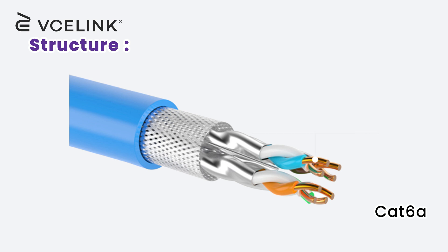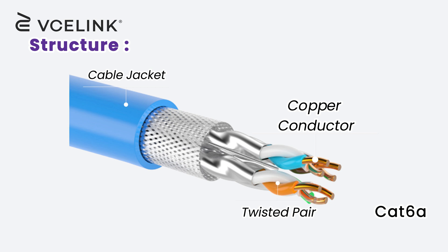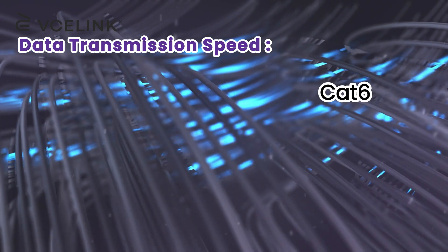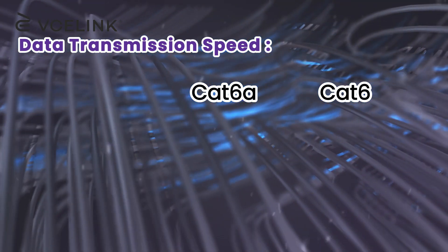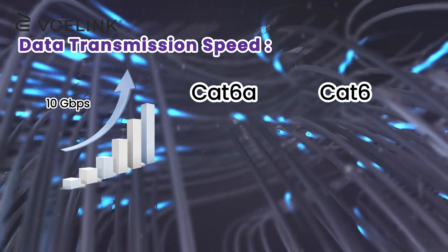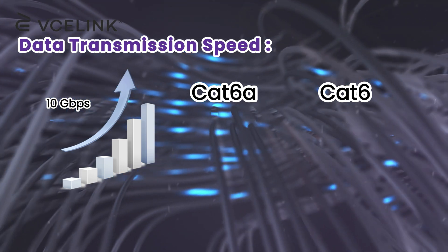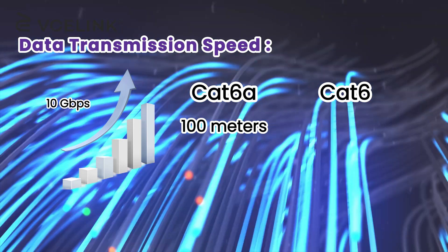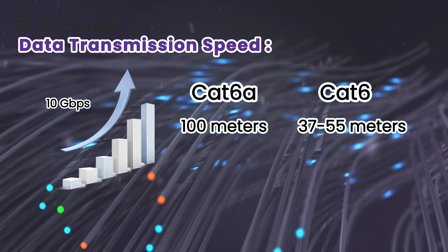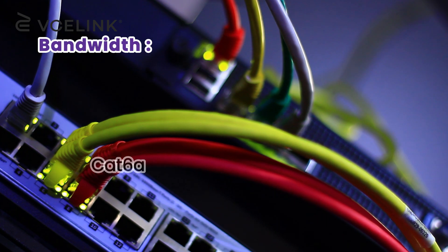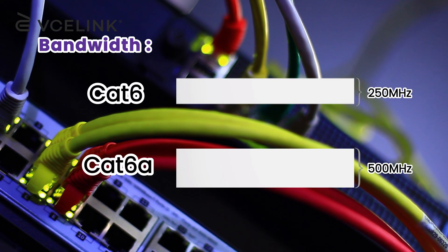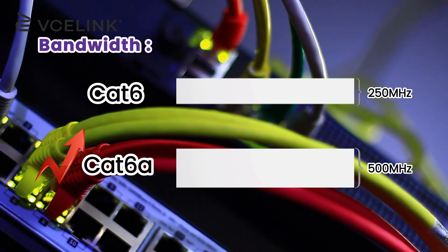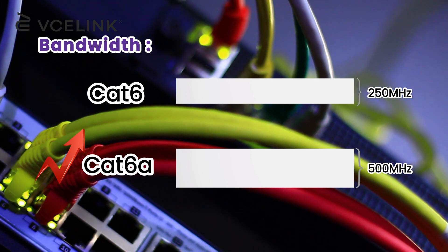CAT 6A cables have thicker copper conductors with thicker cable jackets and tighter twisted pairs compared to CAT 6 cables. Both CAT 6 and CAT 6A cables can support data transmission rates up to 10 gigabits per second, but CAT 6 maintains 10 gigabits per second speed up to 100 meters, while CAT 6 can only do so up to 37 to 55 meters. CAT 6A offers double the bandwidth frequency of CAT 6, reaching 500 MHz for more stable data transmission and longer distances.